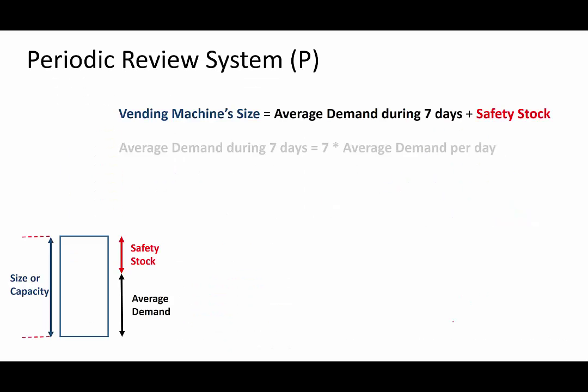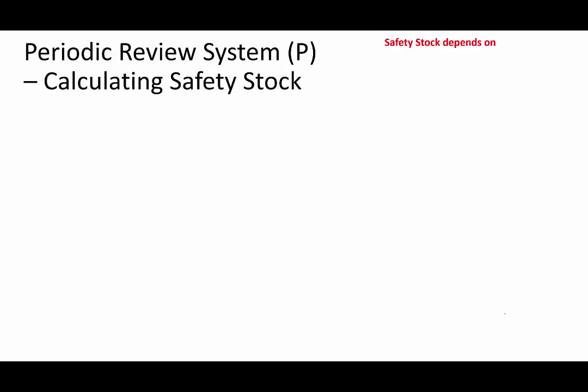Now that we have calculated the average demand during seven days, let's focus on the safety stock. Safety stock depends on two things: first, the customer service level — higher the customer service level, higher the safety stock, which in turn increases the size of the vending machine. Second is the variability of the demand during the seven days — higher the variance, larger the safety stock, and as a result the vending machine's size will increase.